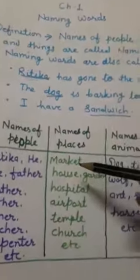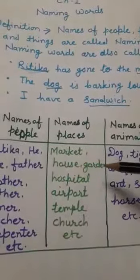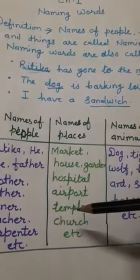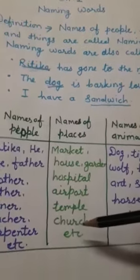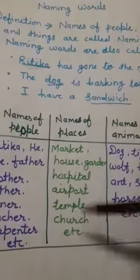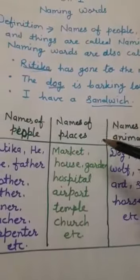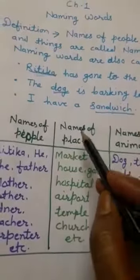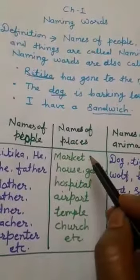Names of places: market, house, garden, hospital, airport, temple, church — these are examples of names of places.